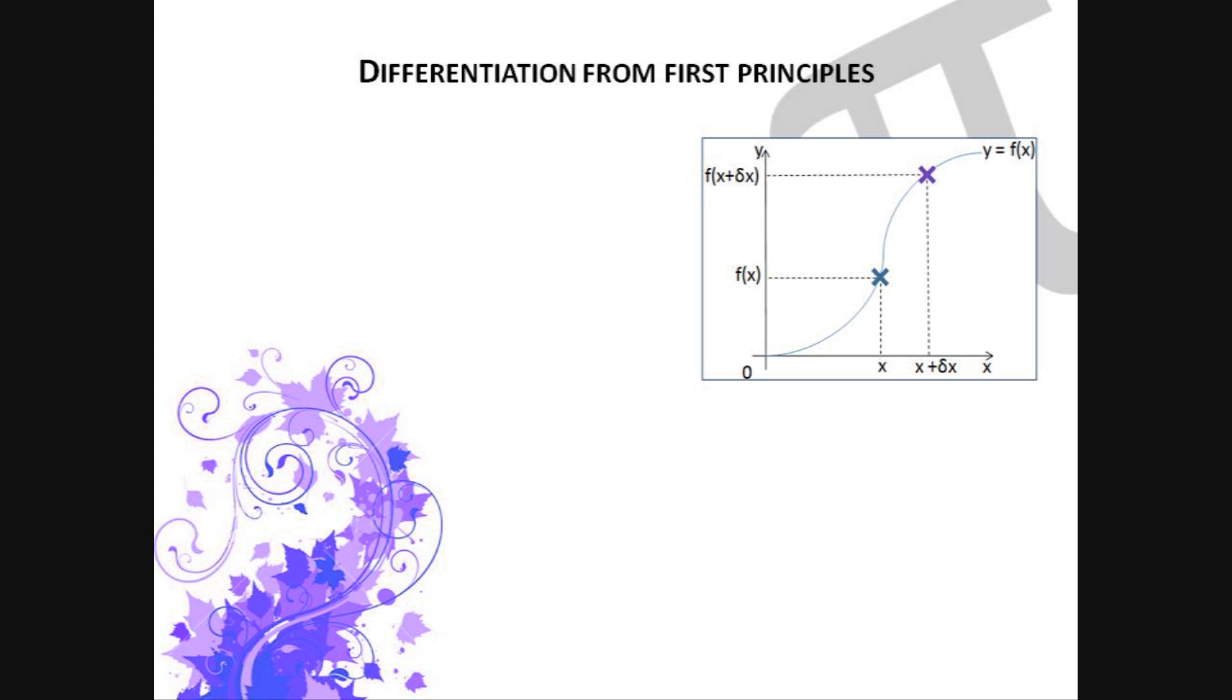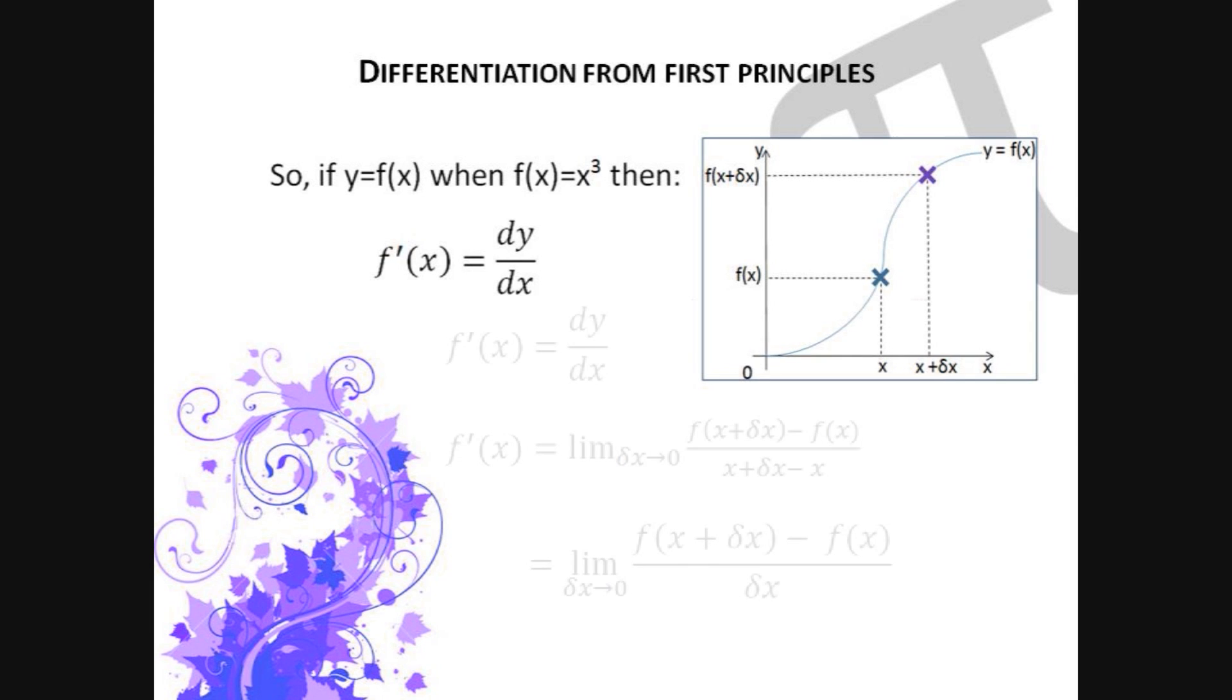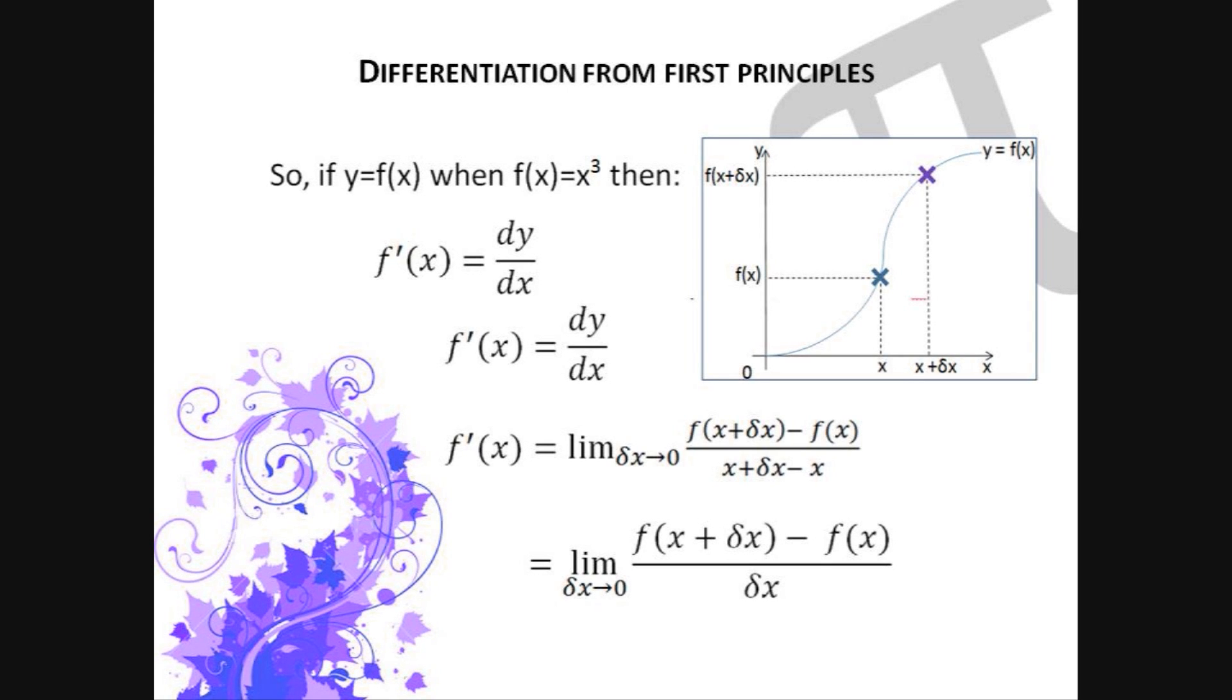So, if we take y equals f of x, when f of x equals x cubed, then f dash x equals dy by dx, which is just a combination of different notation. The gradient between two points of the curve, so we have x and x plus delta x, and we can approximate this gradient of the point at x as delta x tends to zero, the approximation of the gradient will tend to a real value of the gradient. By finding the gradient between the two points, x and x plus delta x, the gradient can be determined when delta x tends to zero.